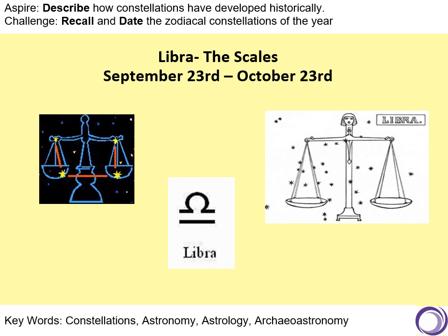So we move on to Libra, the scale. Virgo is the goddess of justice, and the constellation Libra represents the scales or balance and the symbol of equality. The sun passes through Libra on the equinoxes — that's when the day and the night are equal around the world. The equinox, which we will come to in the next lesson, is when day and night are of equal length. The dates for Libra are September 23rd to October 23rd.